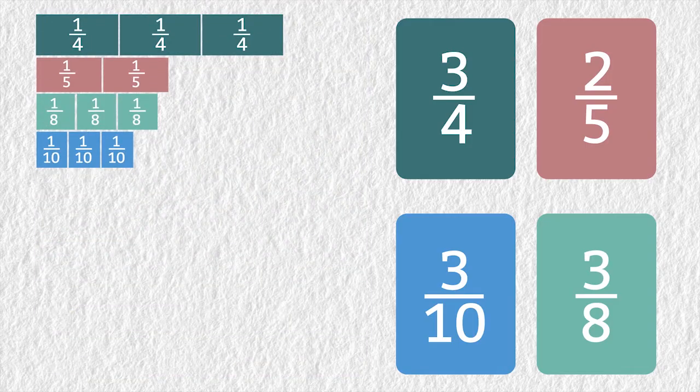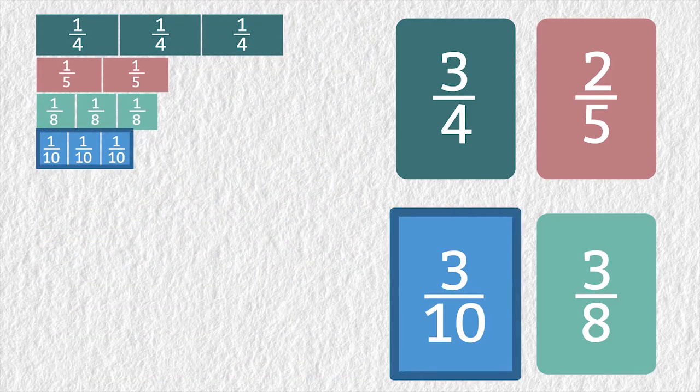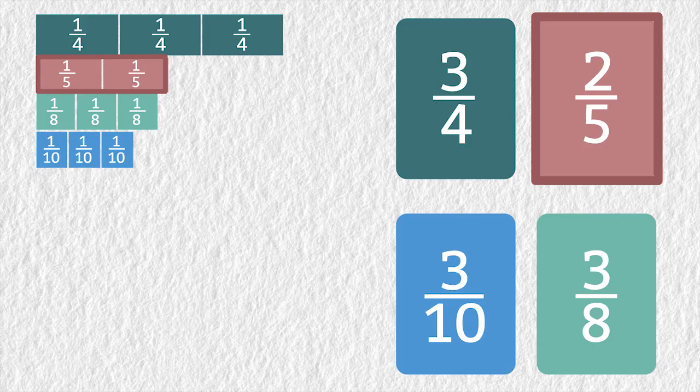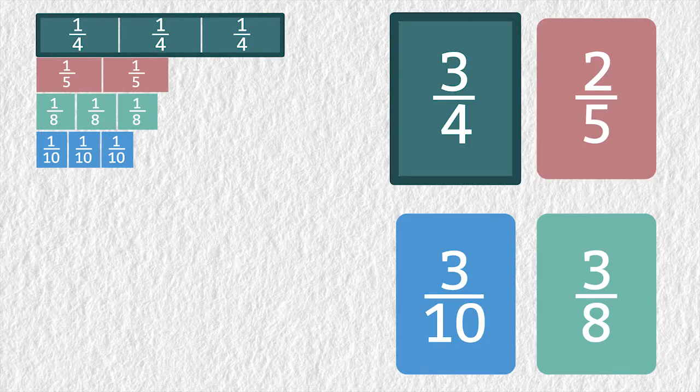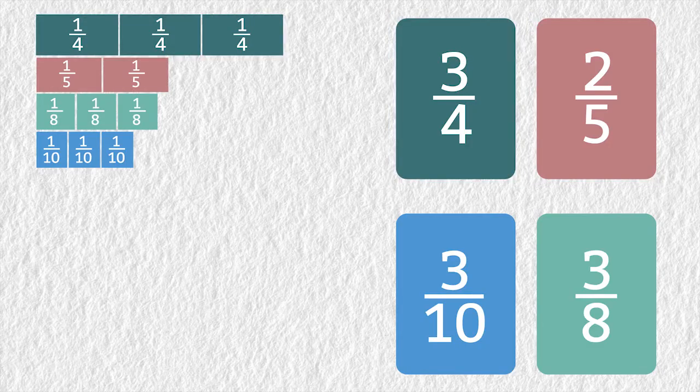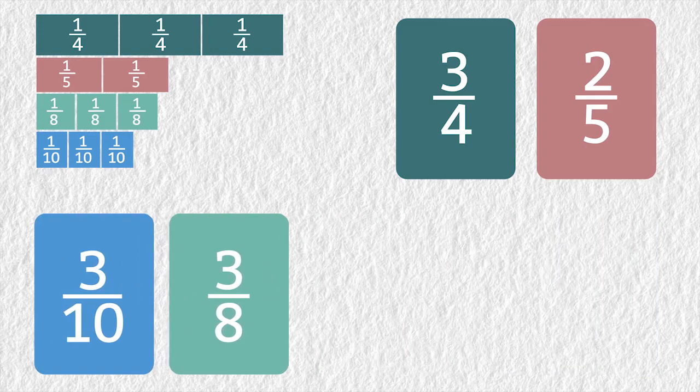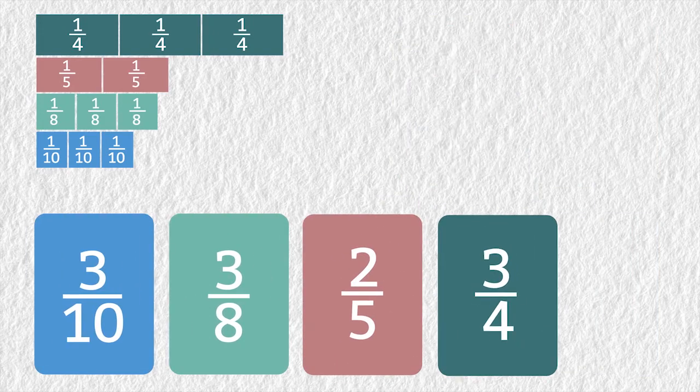The fraction with the least value is 3 tenths. 3 eighths is slightly greater than 3 tenths. 2 fifths has a value greater than both 3 tenths and 3 eighths. 3 fourths is greater than all three fractions. The fractions ordered from least to greatest are 3 tenths, 3 eighths, 2 fifths, and 3 fourths.